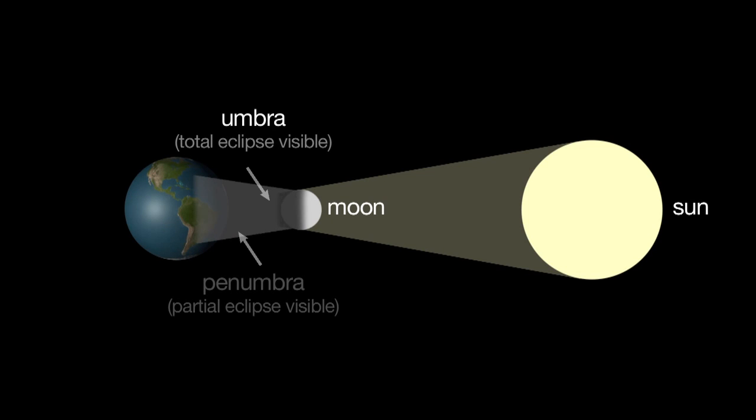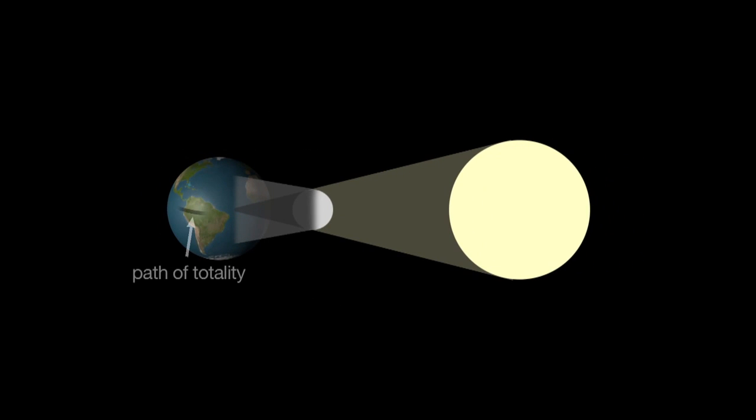The cone-shaped shadow of the moon becomes narrower as it extends towards Earth. Therefore, the path of totality is narrow, typically 10,000 miles long, but only about 100 miles wide.